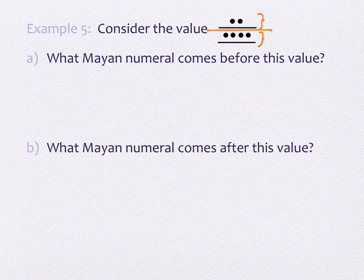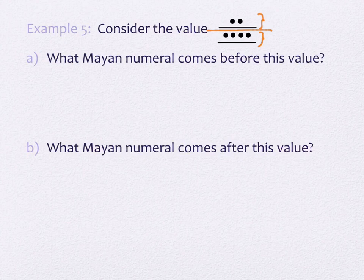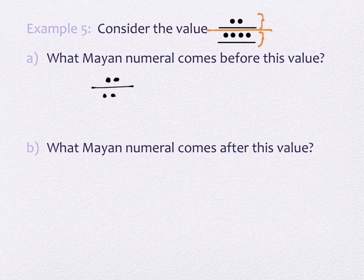We have a Mayan number: two dots above a line on the bottom, and two dots above a line on top. Dots above bars stay in the same place value; bars above dots signal a new place. The bottom value is nine (a bar plus four dots), and the top value is seven (a bar plus two dots). To find the number before: just take away a dot from the bottom, giving eight on the bottom. The top value stays the same.